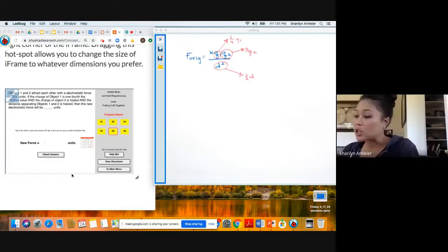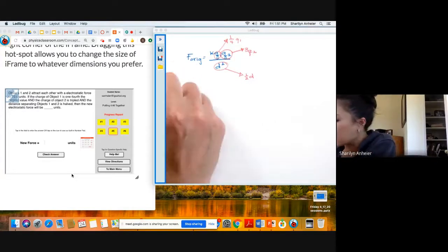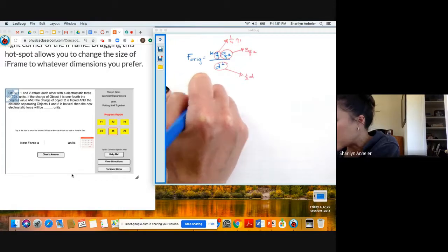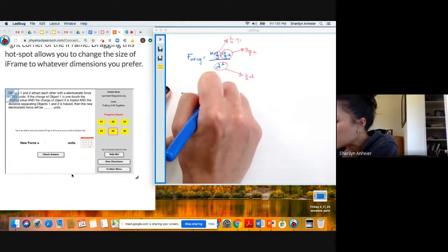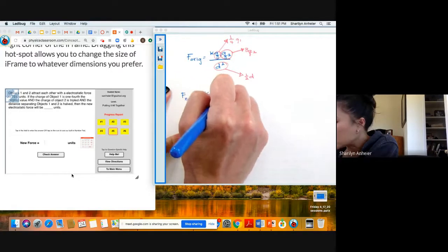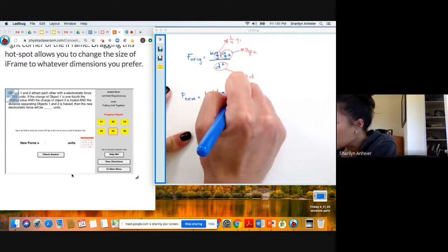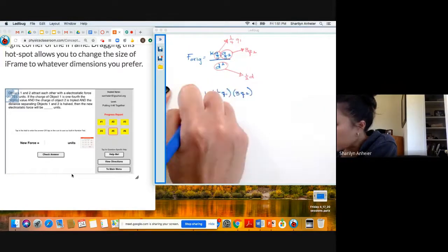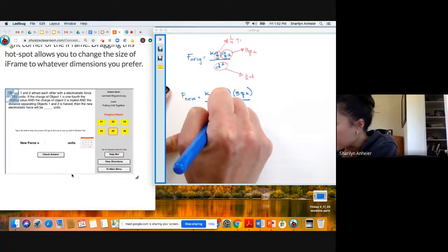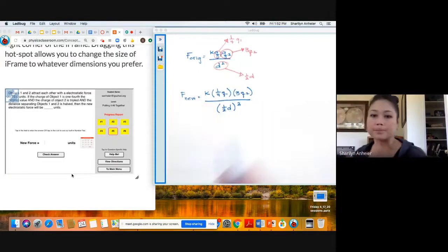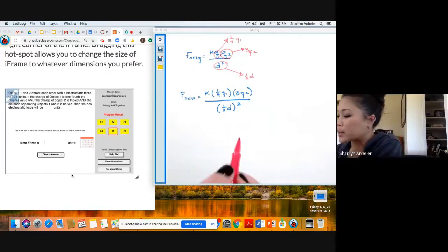Okay, so my new equation has to plug in all of these new values. So F-new is going to be K one-fourth Q1 three Q2 divided by one-half D parentheses squared. So I am going to pull out all the number values and then try to rewrite the original equation by itself.